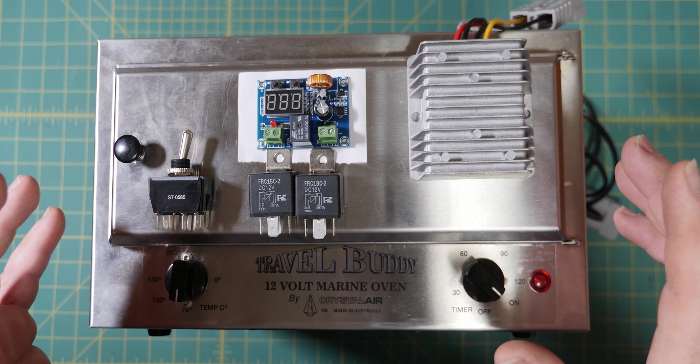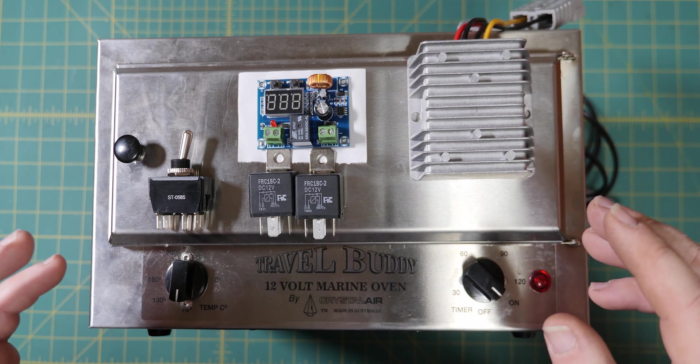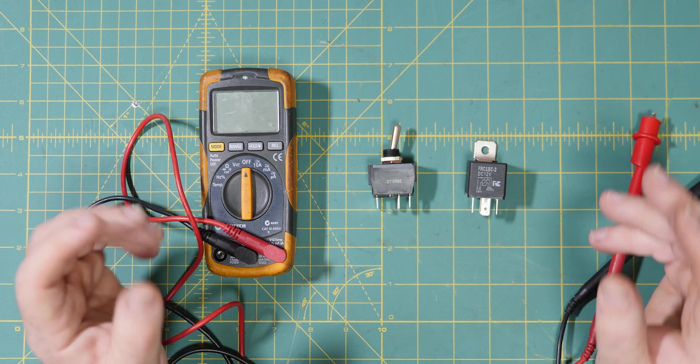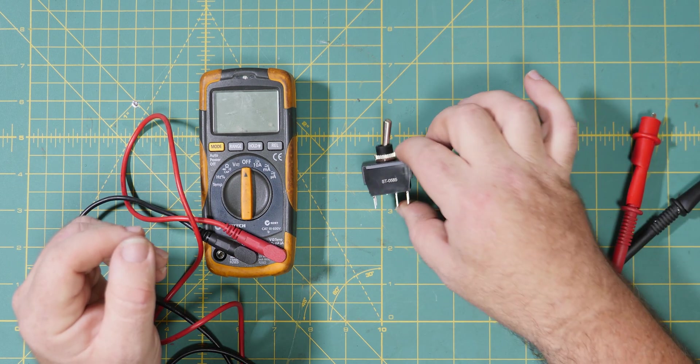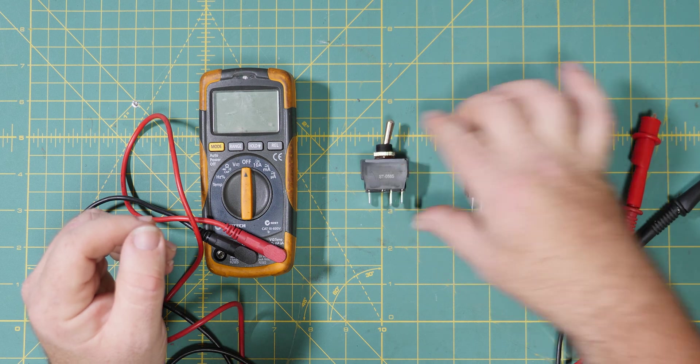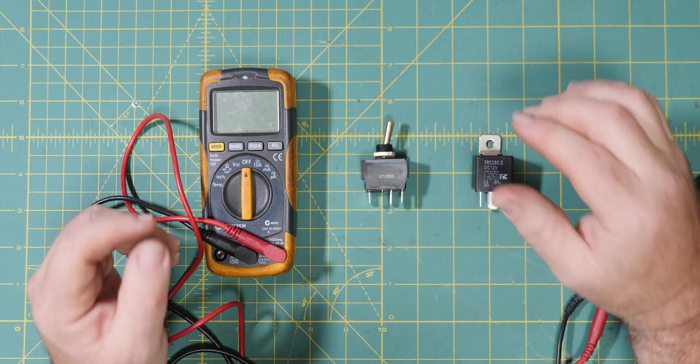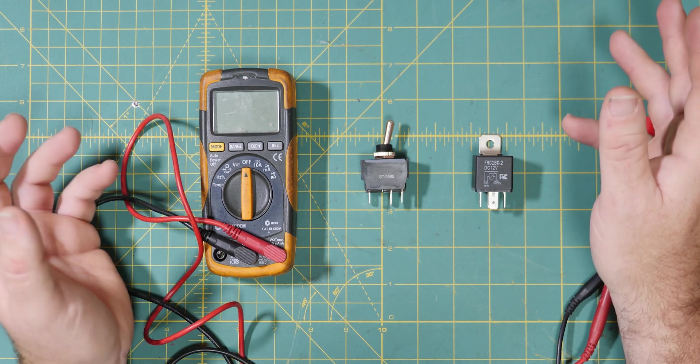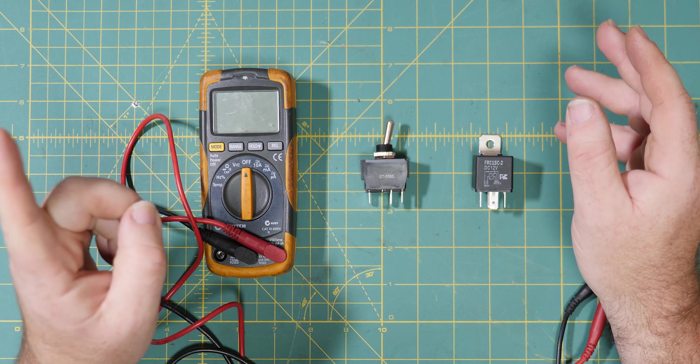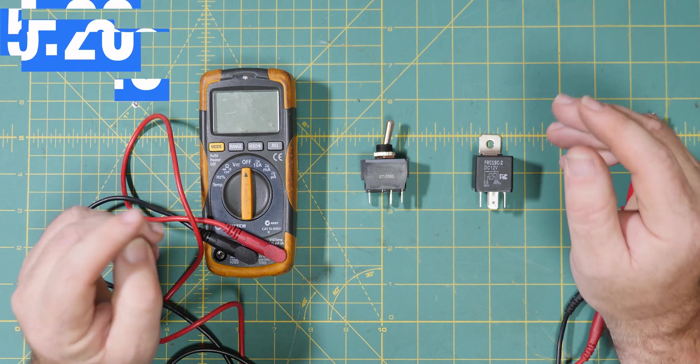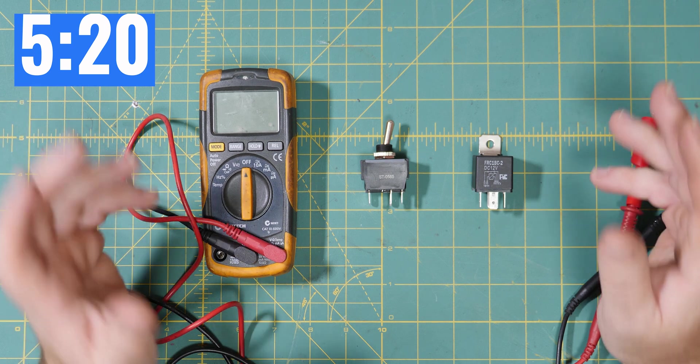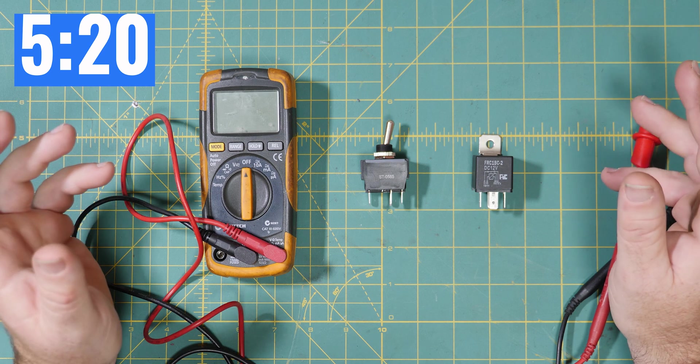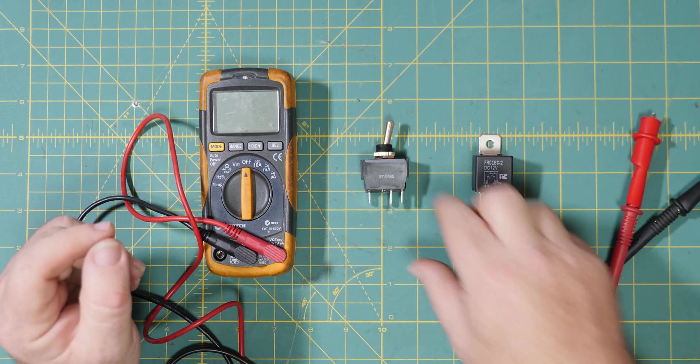I've always been a strong believer in learning things from first principles, so we're going to learn how the switch works and how an automotive relay works. If you already know what a double pole double throw switch is and how it works, feel free to skip ahead using the timestamp. But for everyone else, no one pops out the womb knowing how a digital multiplexer or an NPN junction works.